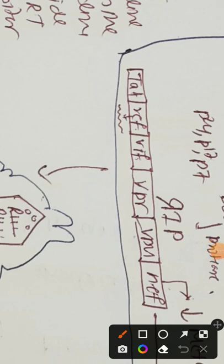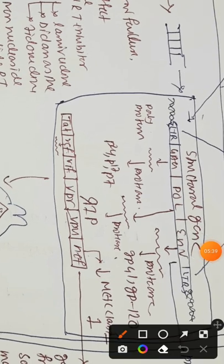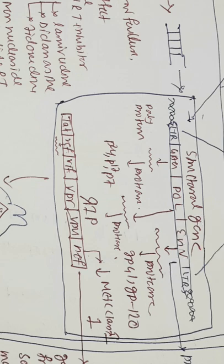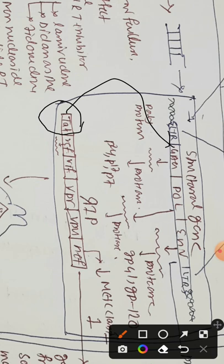The first regulatory gene is the TAT gene. The TAT gene encodes the TAT protein, which acts as a transcriptional factor. We previously discussed that we need transcriptional factors to activate the promoter present in the LTR. The host transcriptional factor is nuclear factor kappa-B, while TAT is the viral transcriptional factor that activates the LTR promoter and amplifies transcription. TAT is a trans-activator protein.